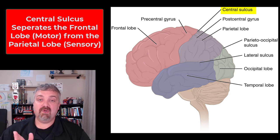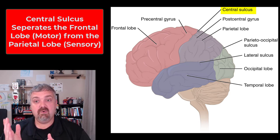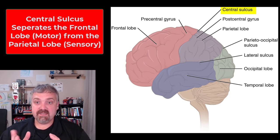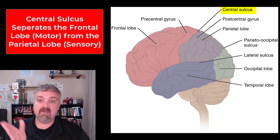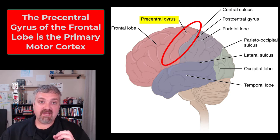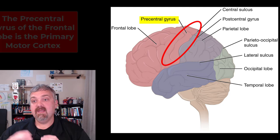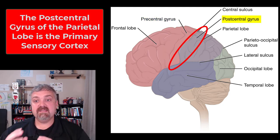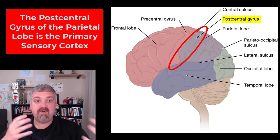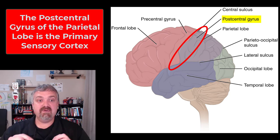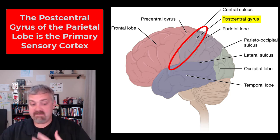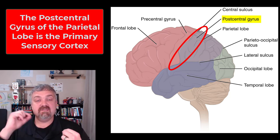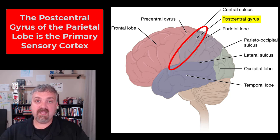We start with the central sulcus in the middle. A sulcus is a shallow groove, a gyrus is an elevated bridge — a hill and a valley — and they're there to increase surface area. The central sulcus separates the frontal lobe, where your primary motor areas are, from the parietal lobe, where your primary sensory areas are. The precentral gyrus of the frontal lobe is your primary motor cortex, and the postcentral gyrus of the parietal lobe is your primary sensory cortex.